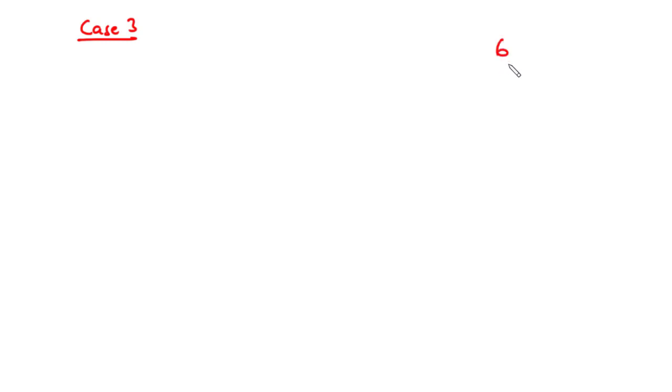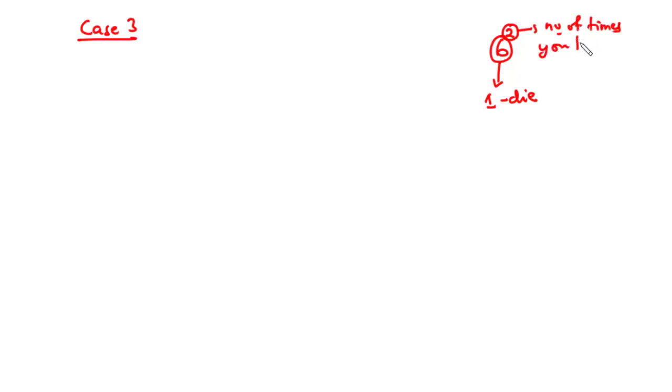For case three, we consider the experiment of tossing a six-sided die twice. The total number of outcomes that can occur is 36. Using the indices approach: since there are 6 elements in the sample space for a single toss, we calculate 6 raised to the power 2, because the die is tossed twice — giving 36 different elements in the sample space.